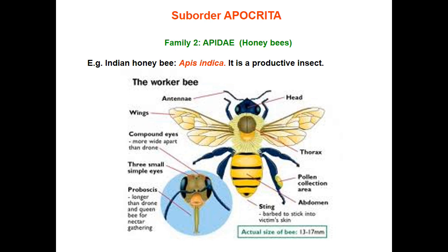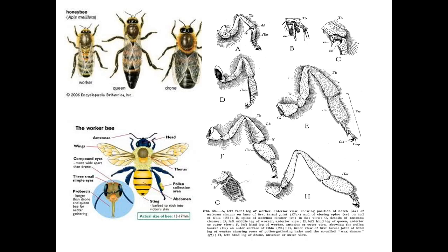Next suborder Apocrita includes all other wasps, bees, etc. The major family is Apidae — honeybees — from which we get natural honey. Their body is covered with branching and plumose hairs, a peculiar character of honeybees. Mouthparts are of the chewing-lapping overlapping type.